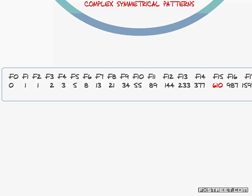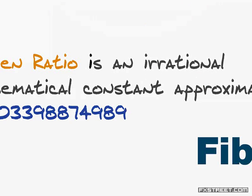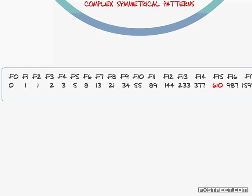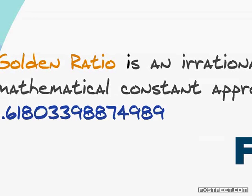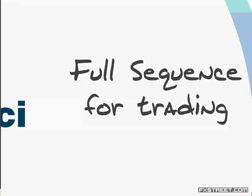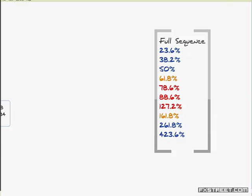What are the Fibonacci sequence numbers for trading? Not all traders use the full sequence. A lot of chart packages only give you the basic retracement numbers: 61.8, 50, 38.2, and 23.6. You want to make sure your chart provider also includes 161.8%, 127.2, 261.8, and 423.6 percent.